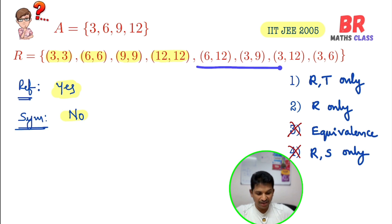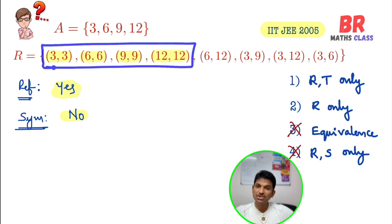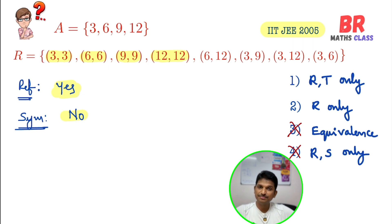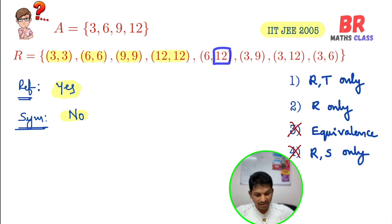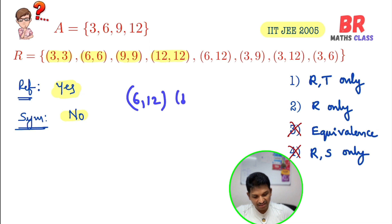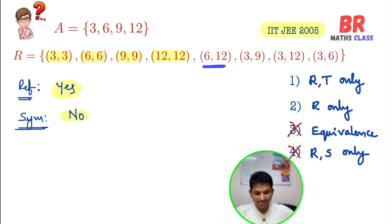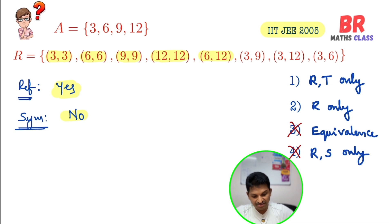To check transitivity, in general you look for (a,b) and (b,c) and check whether (a,c) exists. Diagonal elements like (3,3) always satisfy the transitive condition — no need to check those. For (6,12): it ends with 12, and no other order pair starts with 12, so this element passes the transitive test.